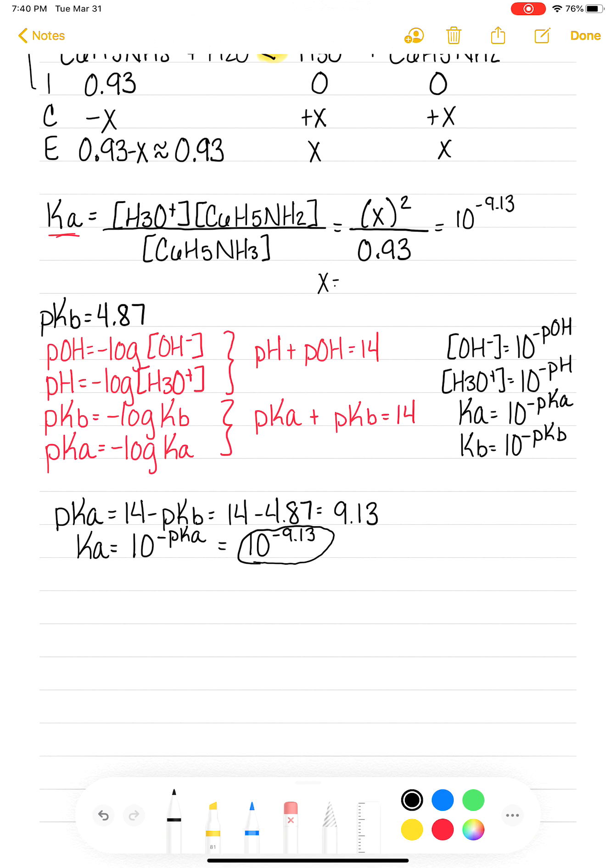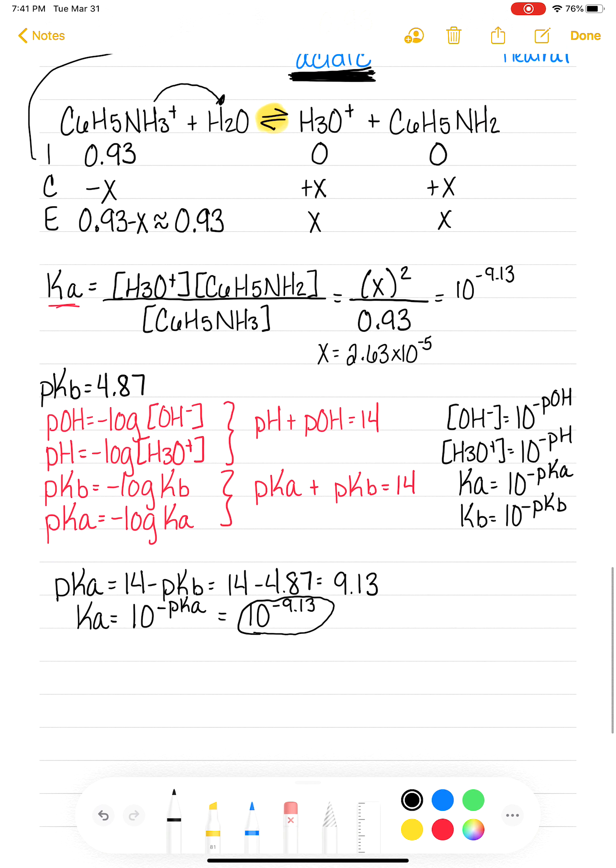So I'm going to start by doing the 10 to the negative 9.13, and I get 7.4 times 10 to the minus 10. That times 0.93, and then take the square root. And that gives me X, which is 2.63 times 10 to the negative 5. X is H3O plus, which means it's very straightforward for me to get the pH. So I get a pH of 4.58.